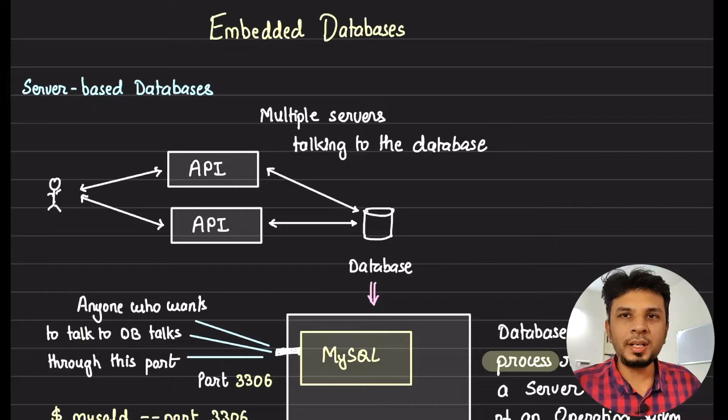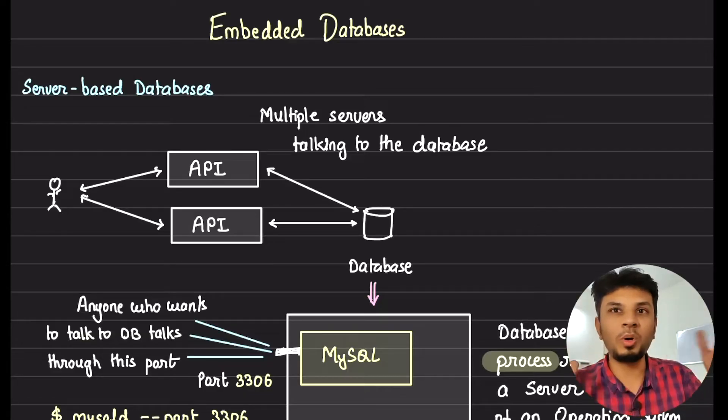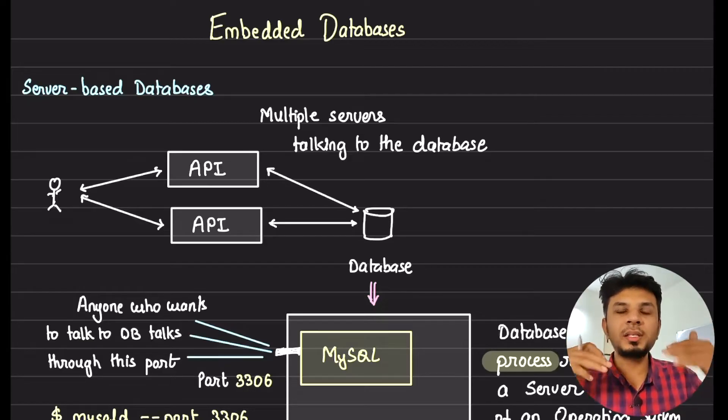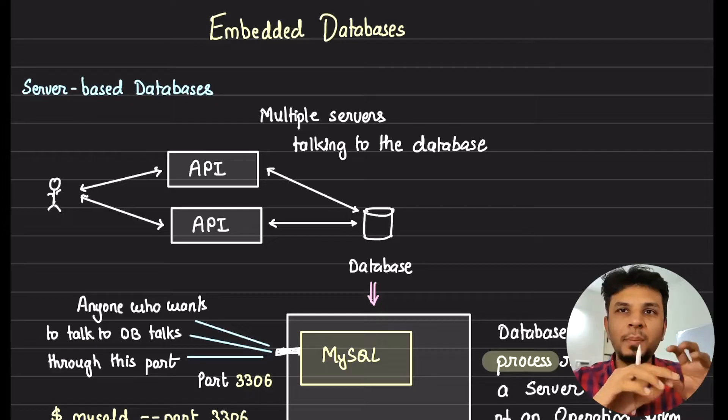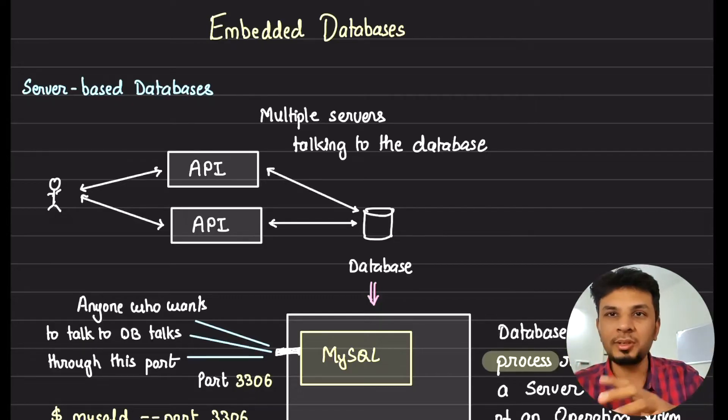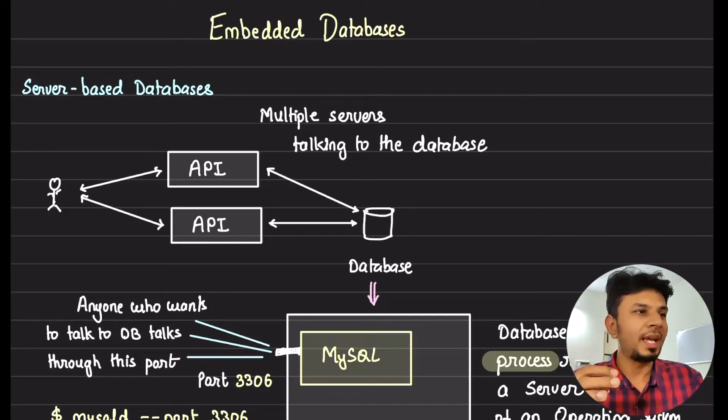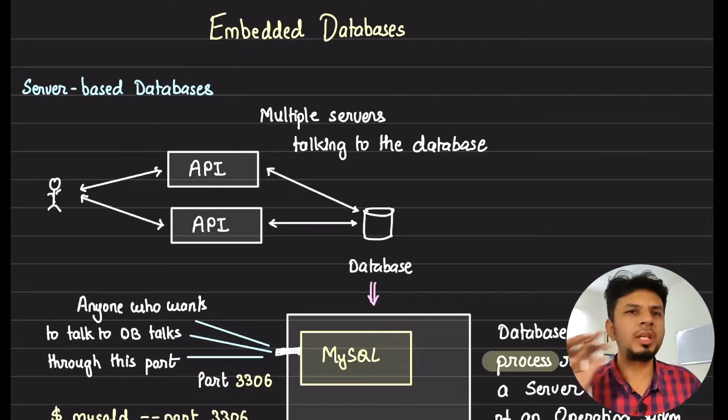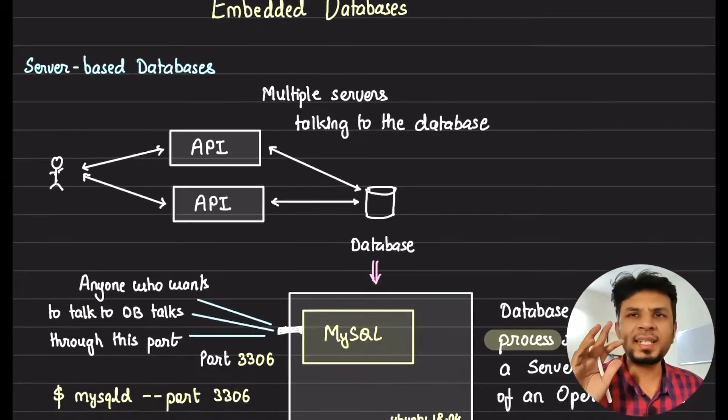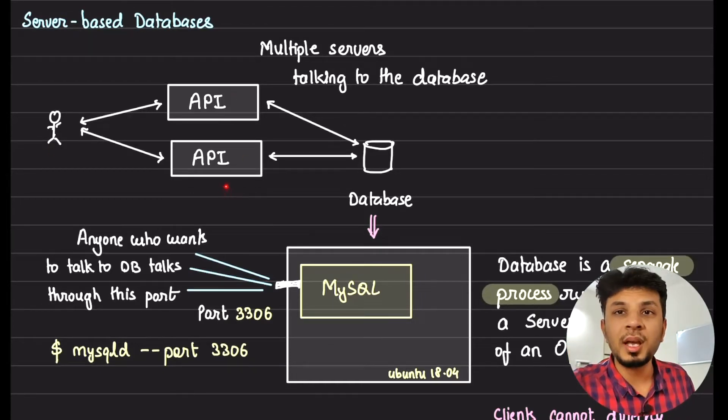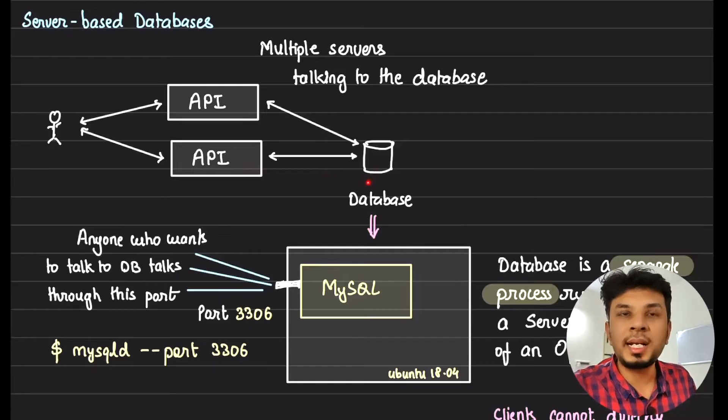Most common class of databases that we all are aware of is server-based databases. For example MySQL, Postgres, MongoDB, Elasticsearch. One thing that ties them together is you always spin up a server. You run a MySQL command on your local machine on a particular port so that database boots up within that machine and then you connect to that machine using a certain port.